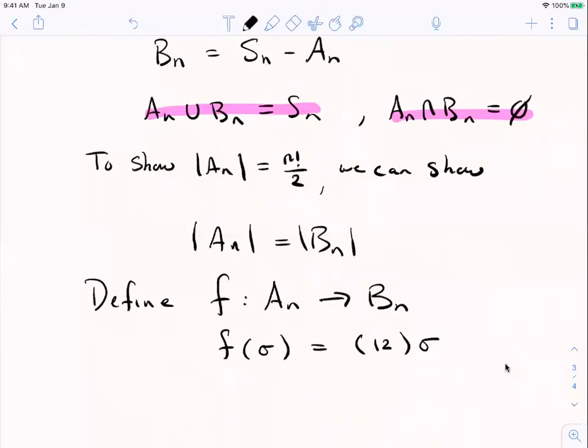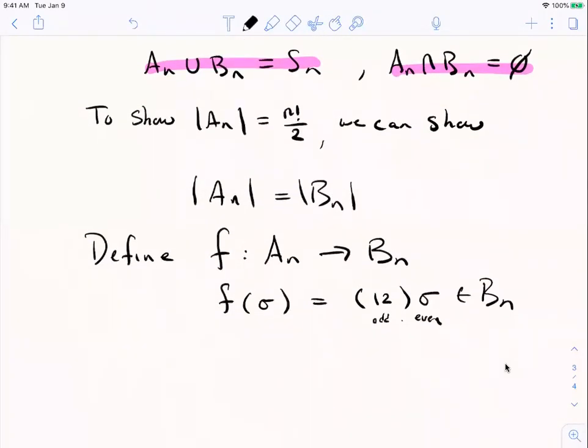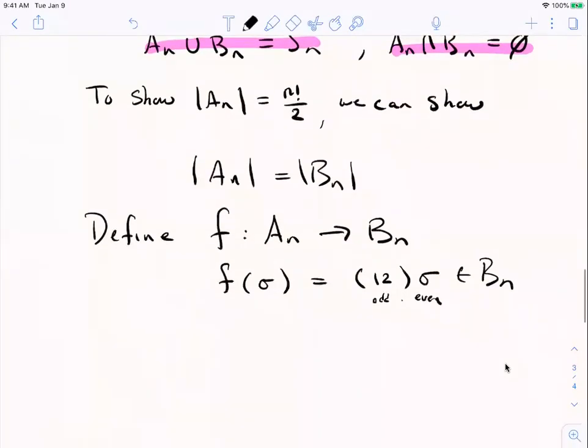One, two is a single transposition, so it's odd. And sigma was an element of A sub n, so it's even. And by our handy fact above, an even permutation times an odd permutation is odd. So given an element of A sub n, this recipe produces an element of B sub n. And I claim that F is a bijection. Let's see it.